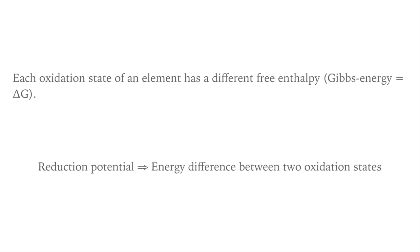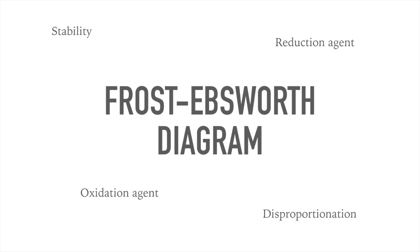A graphical representation can help understand the abstract concept of reduction potentials. The Frost-Ebsworth diagram shows which oxidation states from a certain element are stable and which states tend to disproportionate. You can see very easily which states tend to act as oxidizing agents and which as reducing agents.